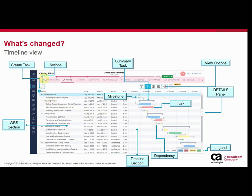Going across, you see the plus icon, which is the standard for creating a new task in the WBS section. You also see a three-dot icon for action items — any actions that can be performed in the timeline view are listed there. Right now, those actions include being able to open this up in MSP or in Open Workbench.